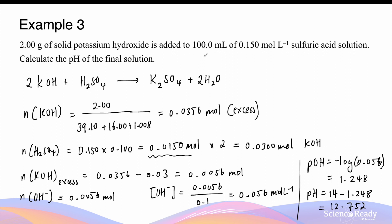Since the fewest number of significant figures in this question is 3, I'll leave this answer as 3 decimal places. This concludes the video on calculation of pH after mixing acid and bases.